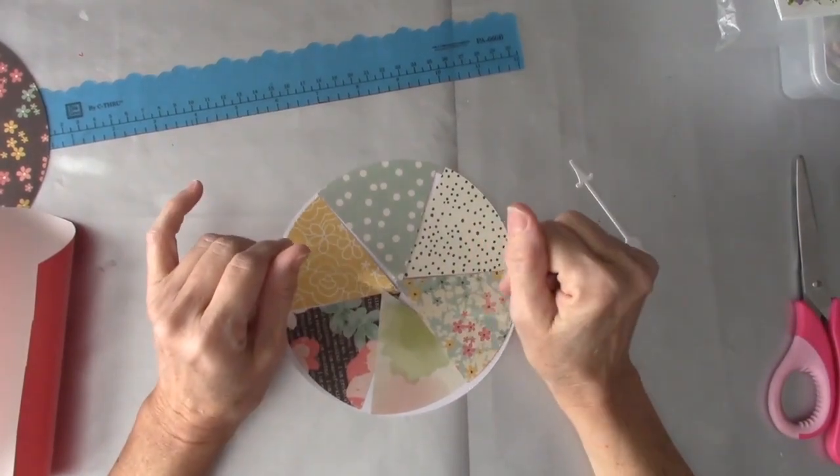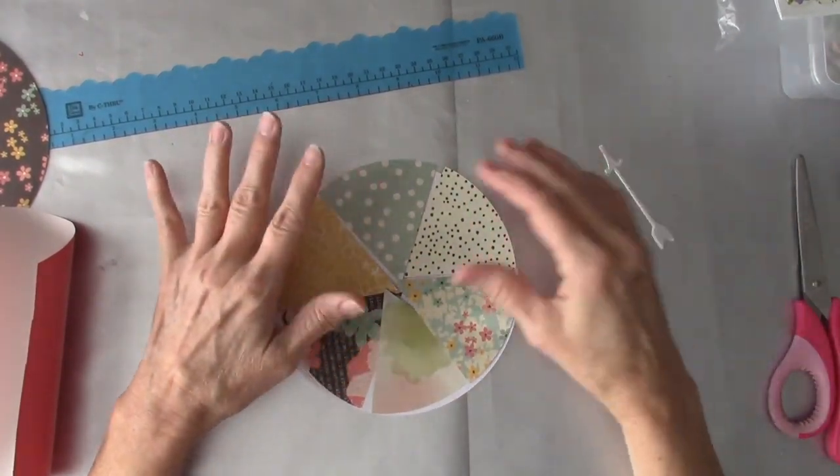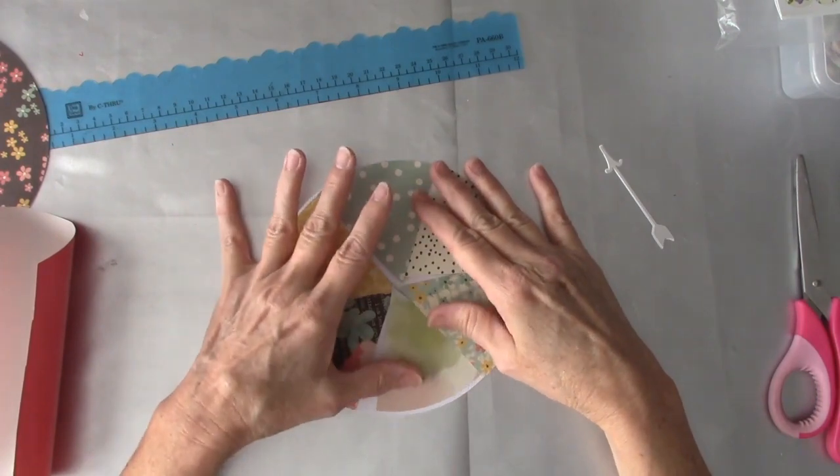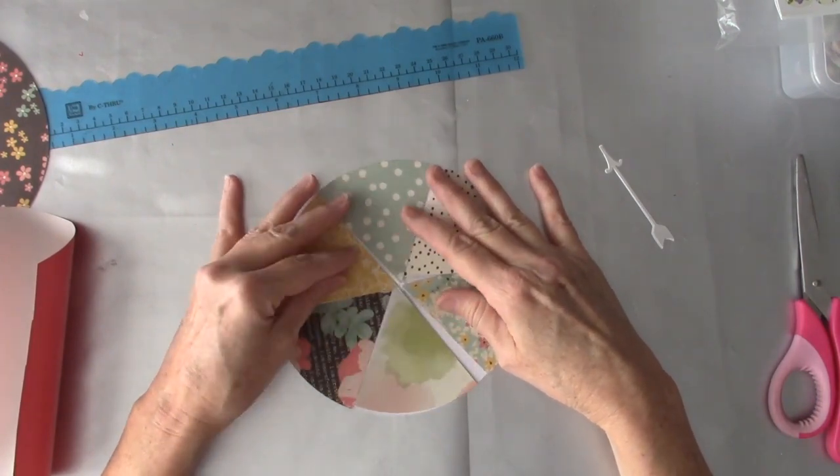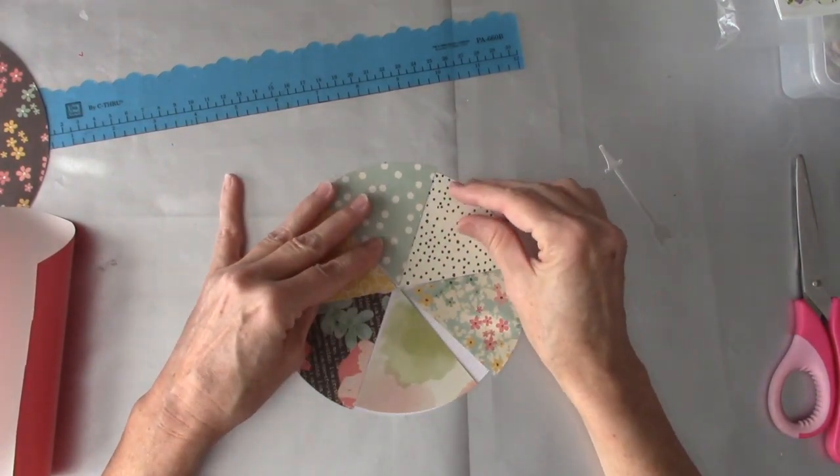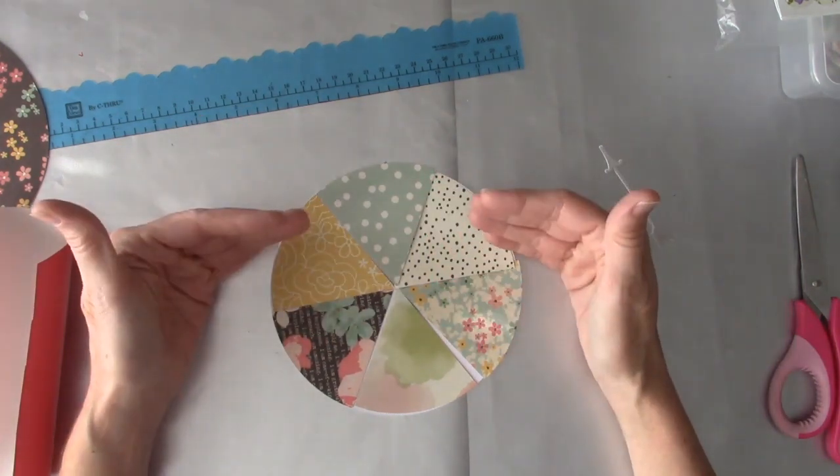Hi Sally here and I am going to be working on my September prompt for One Little Word. For this month, Ally Edwards did a spinner.